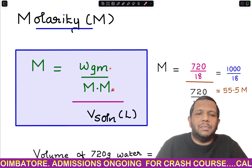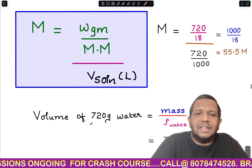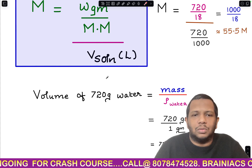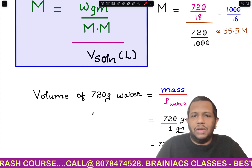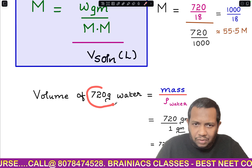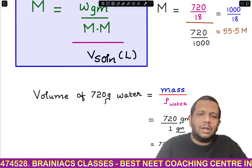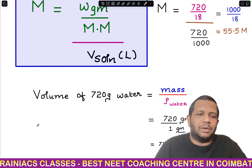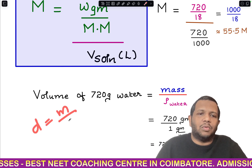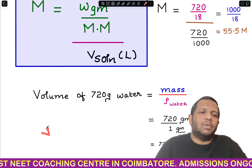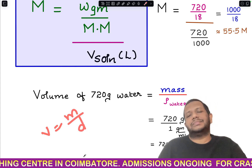Molarity is: weight in grams divided by molar mass, divided by volume of the solution. In this question, the mass of pure water given is 720 grams. To substitute into the formula, we need to find the volume of 720 grams of water. We use: volume = mass ÷ density.